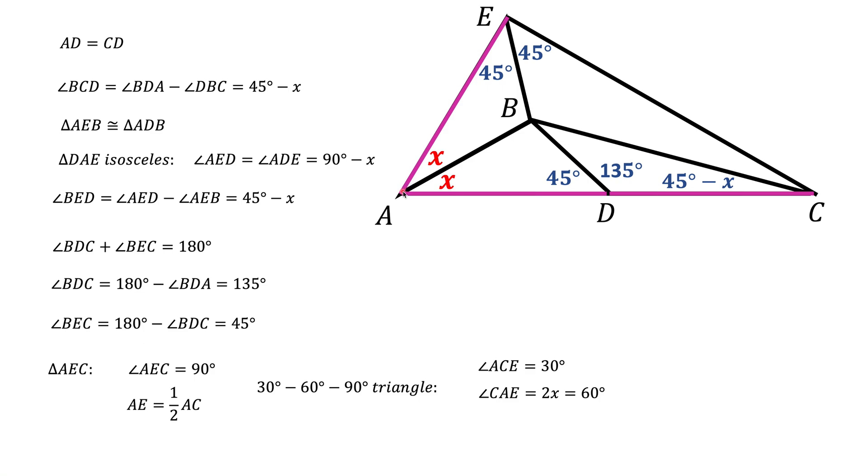And in particular, the angle that lies opposite of the side AE, the side that is half of the hypotenuse, should be 30 degrees, and the other angle should be 60 degrees. But this angle is 2X, so 2X equals 60 degrees, and therefore X equals 30 degrees. And that is our final answer.